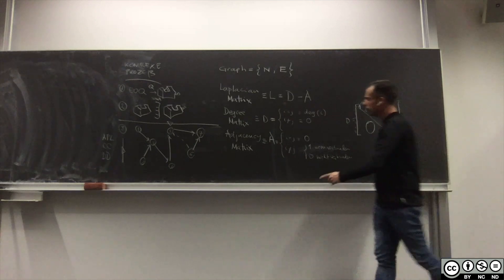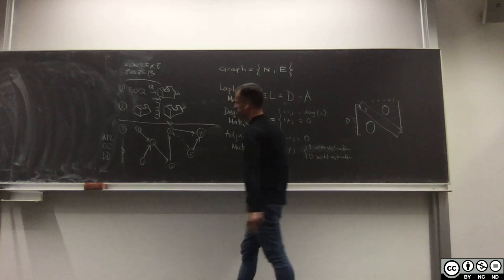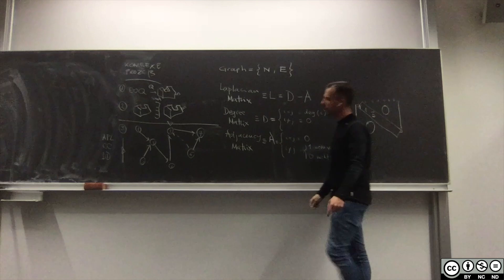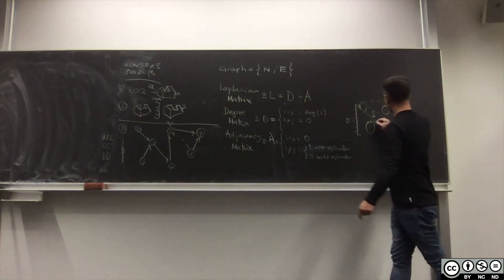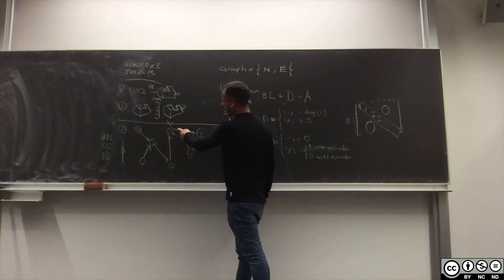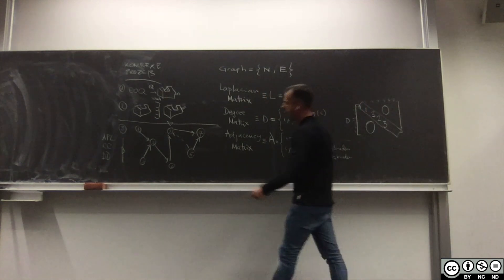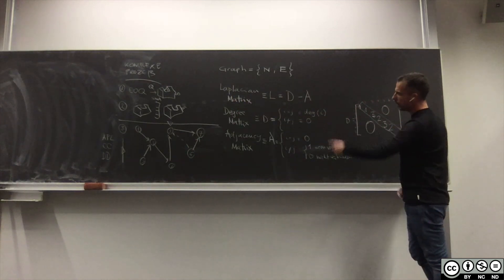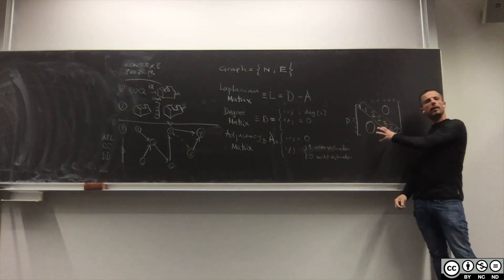Wie viel Nachbarn hat 3? 1 2 und 3. 3. Wie viel Nachbarn hat 4? 1 und 2. 2. Wie viel Nachbarn hat 5? 1 2 und 3. Wie viel Nachbarn hat 6? 1 und 2. Und wie viel Nachbarn hat 7? Auch 2. Das ist die Degree Matrix von diesem Prozess.